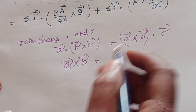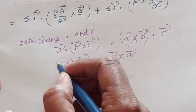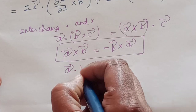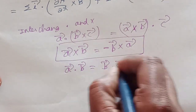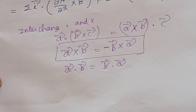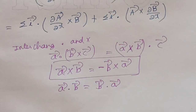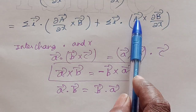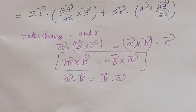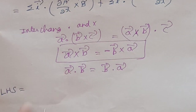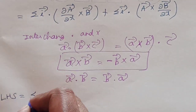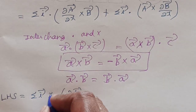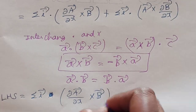The cross product is not commutative. If you have a×b, it equals minus b×a. The dot product is commutative: a·b = b·a. But the cross product is not commutative, so we get a minus sign. The LHS becomes: sigma i vector cross (∂a/∂x) dot b vector, with a minus sign for the second term.